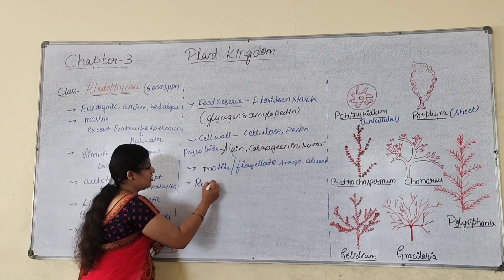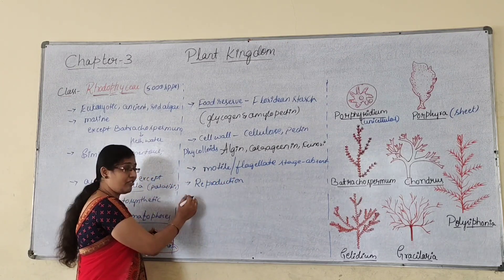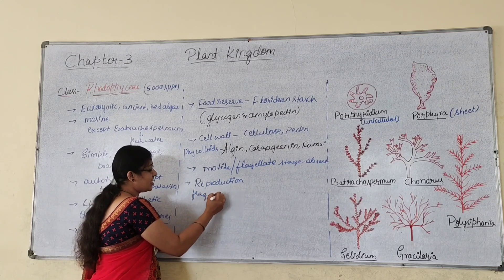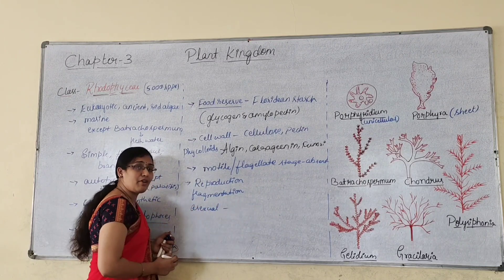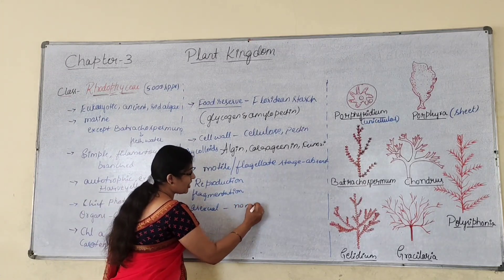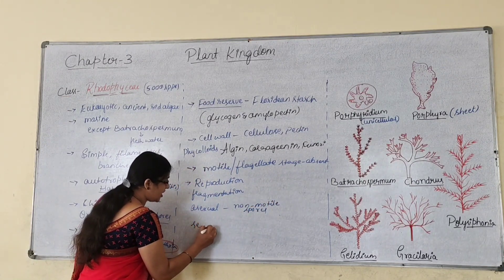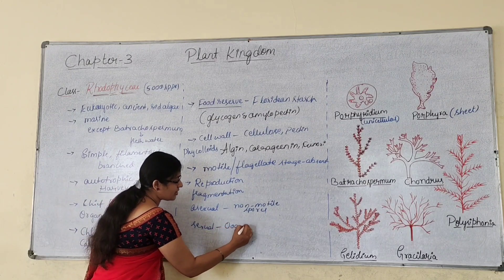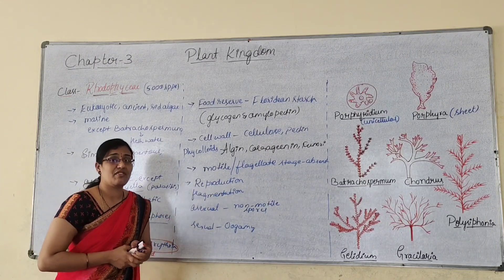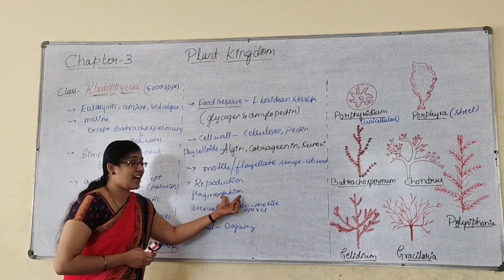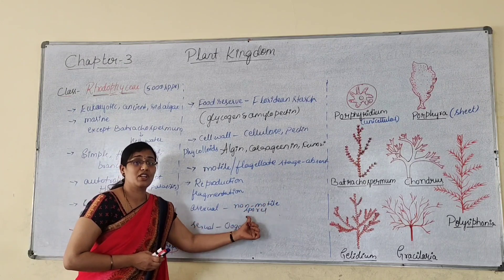Reproduction in case of red algae takes place vegetatively by fragmentation. Asexual reproduction takes place by the formation of non-motile spores, and sexual reproduction takes place by oogamy.